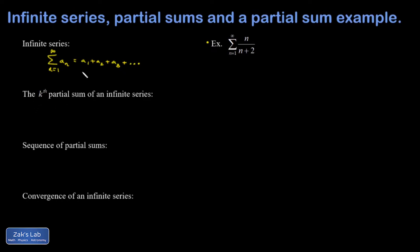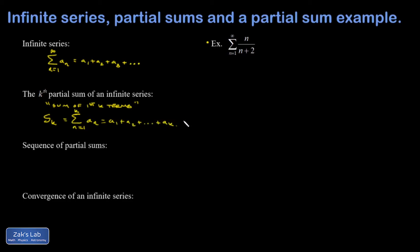The kth partial sum of an infinite series means the sum of the first k terms. In summation notation, s_k is just the sum of the first k terms — that's a finite sum. This gives us a handle on how to deal with infinite sums. In expanded form, s_k would be a_1 plus a_2 and so on all the way to the kth term. s_1 is just the first term, s_2 is a_1 plus a_2, s_3 is a_1 plus a_2 plus a_3, and so on.